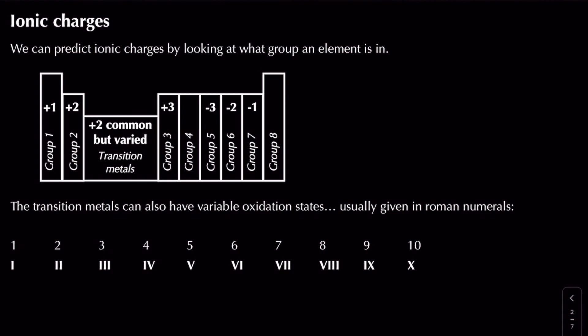Looking at groups 1, 2 and 3 - why do they form positive ions? Well, let's take magnesium as an example. Magnesium has two electrons in its outer shell, and it reacts to form a stable full outer shell. It can either lose two electrons or gain six electrons, and we normally go with the easiest way, which is to lose two electrons. So magnesium forms a 2+ charged ion, and all group 2 elements form 2+ ions. Similarly, group 3 elements have three electrons in the outer shell and form 3+ ions.